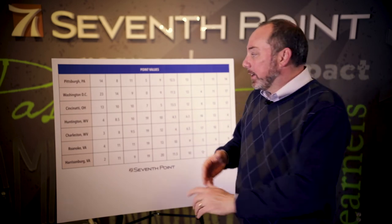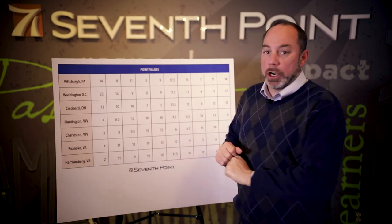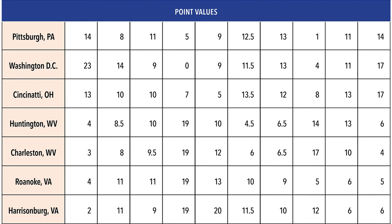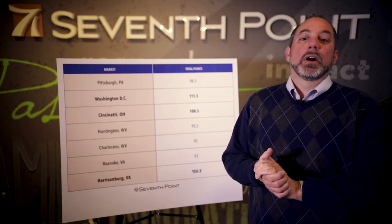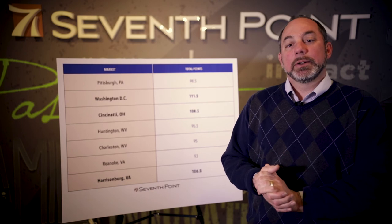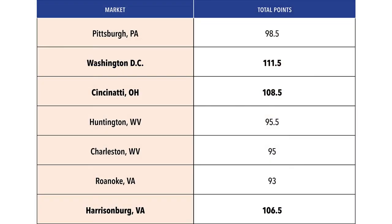Once you've translated your indexes into point scores, you're almost done. What you'll end up with is a chart that has numeric values in every square — these are the point values that each market gets for every one of the data points. Then you have your last step, which is to add them all together and see which market has the highest point value. You'll end up with a list of markets with a total point value. For example, Pittsburgh has 98.5 points, whereas Washington D.C. has 111.5 points.